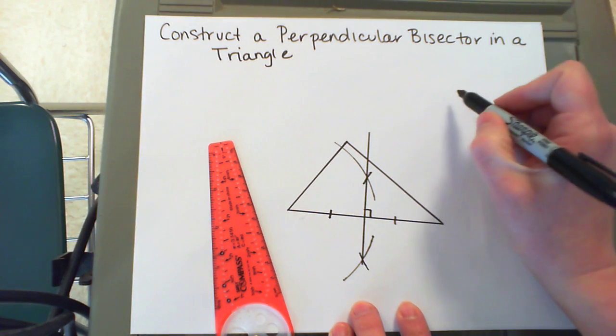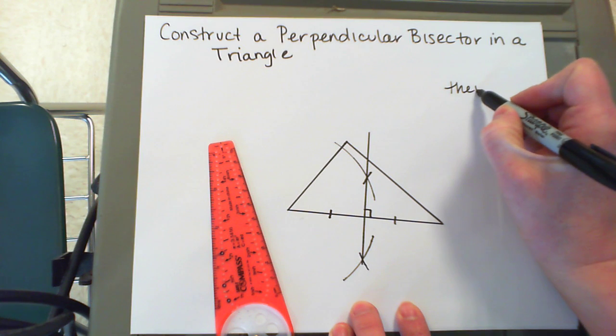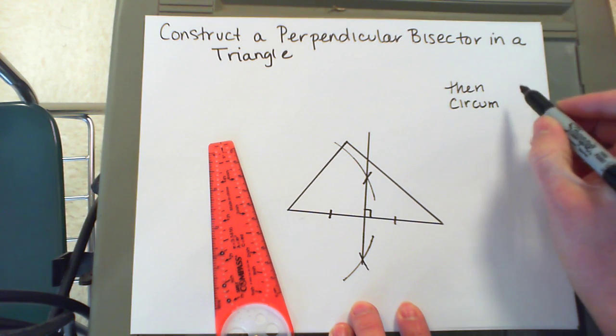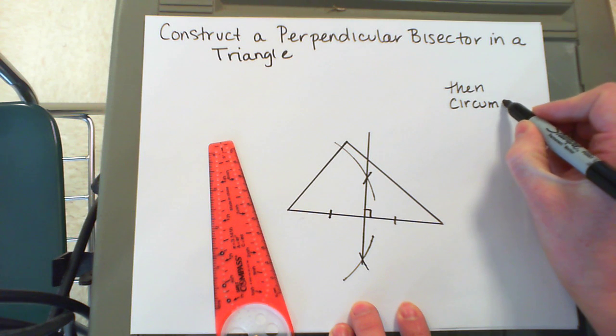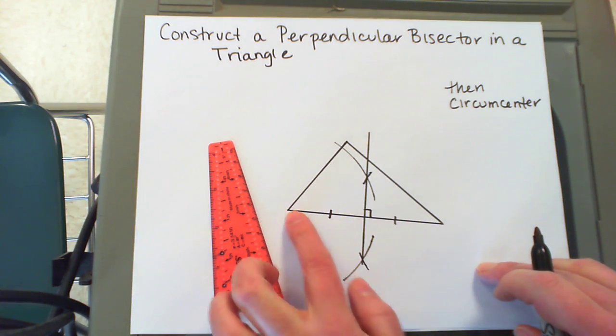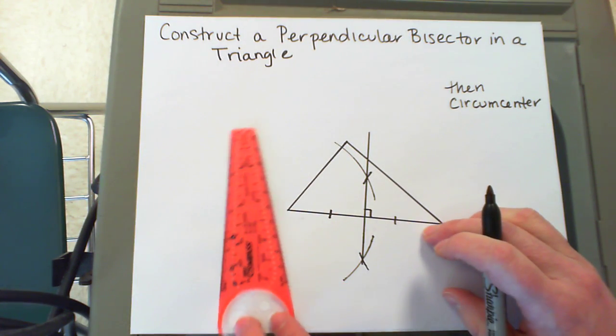Now if I wanted to make a circumcenter, I need to construct at least one other perpendicular bisector. I'm going to make a perpendicular bisector on this short side using the same process.